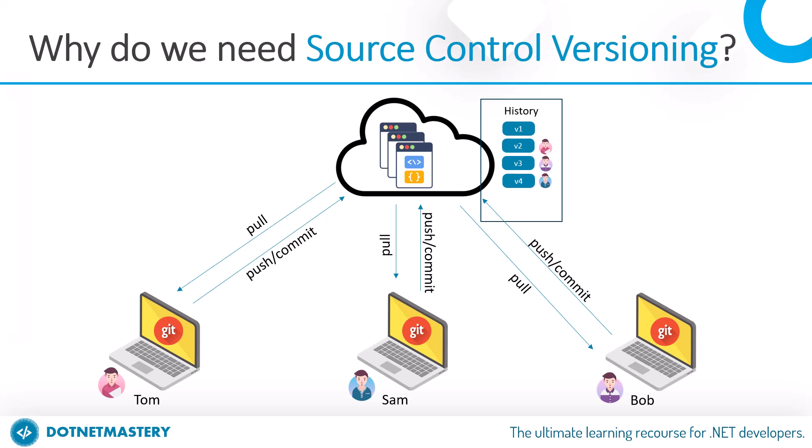When Sam commits his changes, he will also pull down from the remote server so that Bob's changes are not lost. Everything is synchronized and none of the changes will be lost — that is the beauty of the source control versioning system. You can see the power of version controlling and how it enhances development when multiple developers are working on the same project.